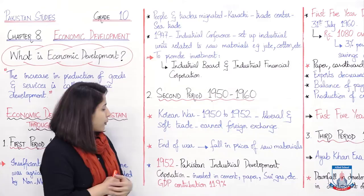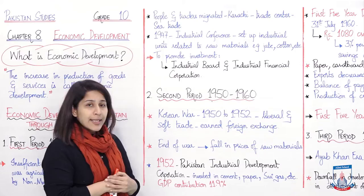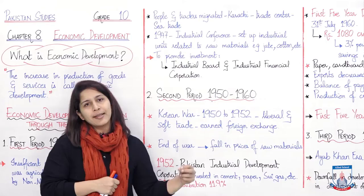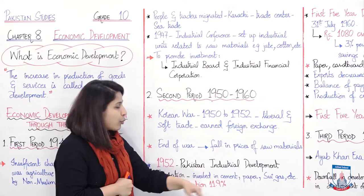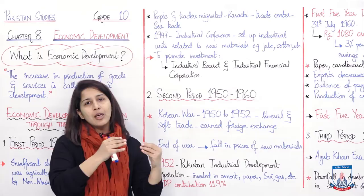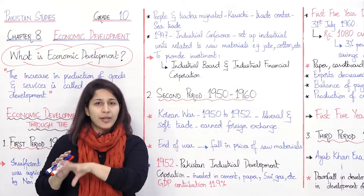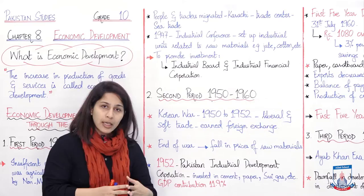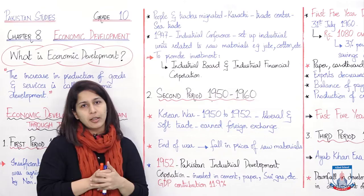1952 mein Pakistan Industrial Development Corporation was set up aur isne cement, paper, sui gas jaise sectors mein invest kiya. So jo GDP ki contribution thi wo 11.9 percent ho gayi industrial sector ki taraf se. Pehle sirf agriculture se aa rahi thi — first era mein only agriculture was contributing — second era mein thodi industrial development hui, in industries mein invest kiya gaya, toh GDP ka contribution badha aur 11.9 percent ho gaya industrial sector ki taraf se.